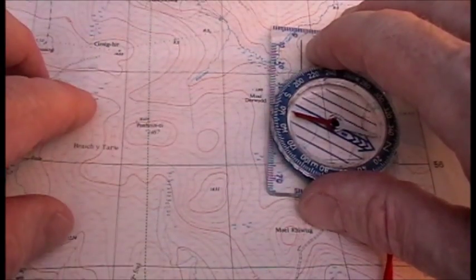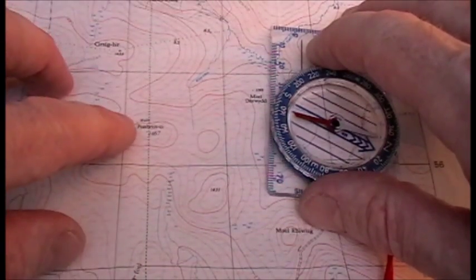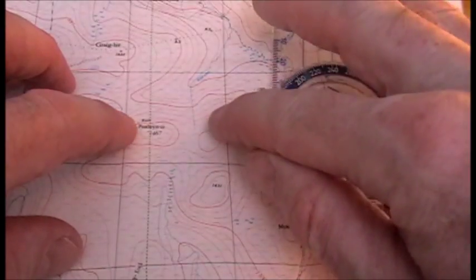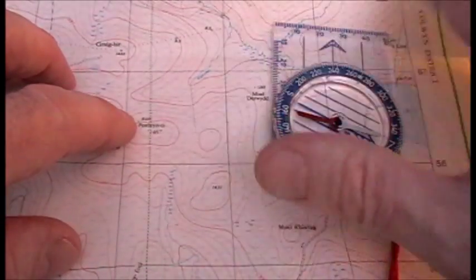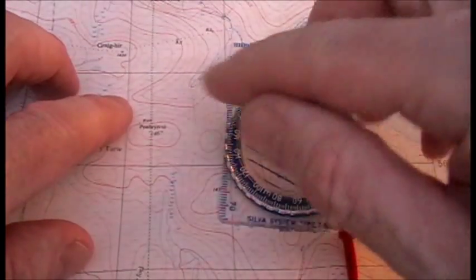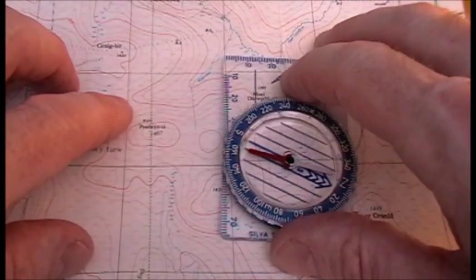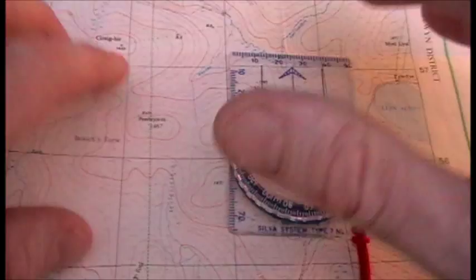So one unit of measure on the map is equal to 25,000 units of measure on the actual ground. Or, one centimeter measured on the map is equal to 25,000 centimeters or 250 meters on the ground.